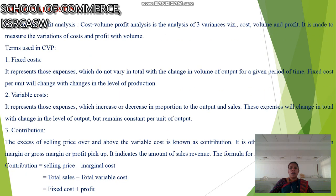Next is cost, volume, profit analysis. The cost-volume analysis covers three levels of variance, that is cost, volume and profit. It is used to measure the variance of cost and profit with volume. The terms CVP stands for cost, volume, profit.